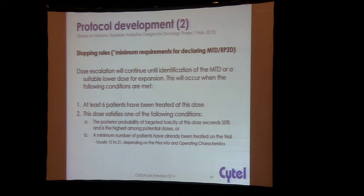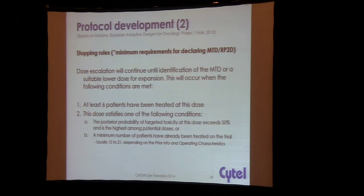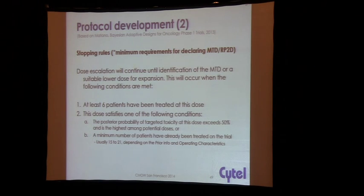Novartis published in the New England Journal of Medicine earlier this year about their ceritinib trial, and if you go online — it's a huge 70-megabyte appendix — they actually have their whole protocol and statistical analysis plan attached. You can see what language they use, how they present things, and how they describe these designs. I encourage you to have a look at that.